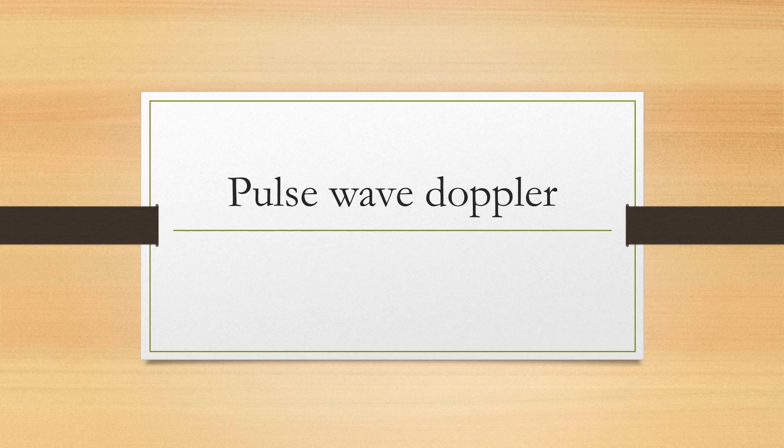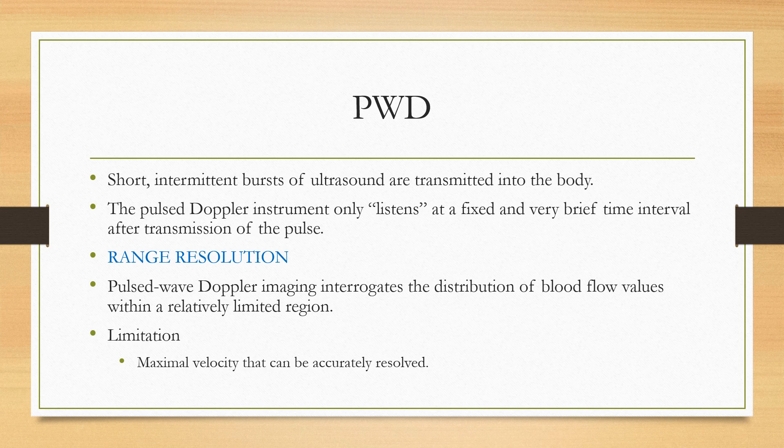In Pulse Wave Doppler, a short intermittent burst of ultrasound is transmitted into the body. There is a single transducer which transmits intermittent bursts of sound waves into the heart. Doppler is mainly used to study the flow or physiological aspect of the heart, while the anatomical aspect is studied in 2D echocardiography. In Pulse Wave Doppler, there is a single transducer which emits short bursts of ultrasound waves.